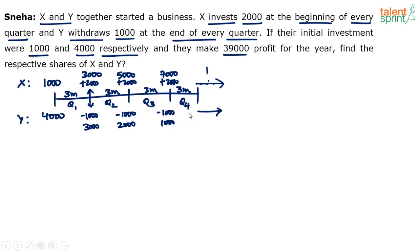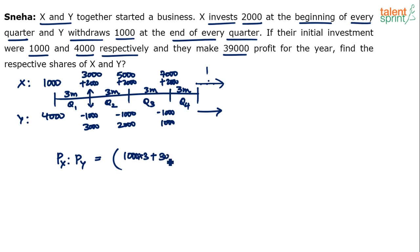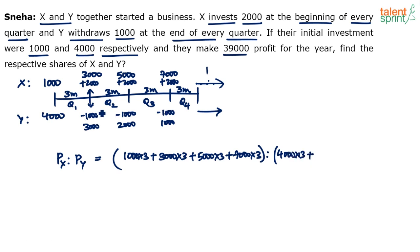Once you understand this, solving becomes easy. Profit is divided based on the ratio of investment multiplied by time. So profit of X to profit of Y equals: X's side — 1,000×3 + 3,000×3 + 5,000×3 + 7,000×3; Y's side — 4,000×3 + 3,000×3 + 2,000×3 + 1,000×3.